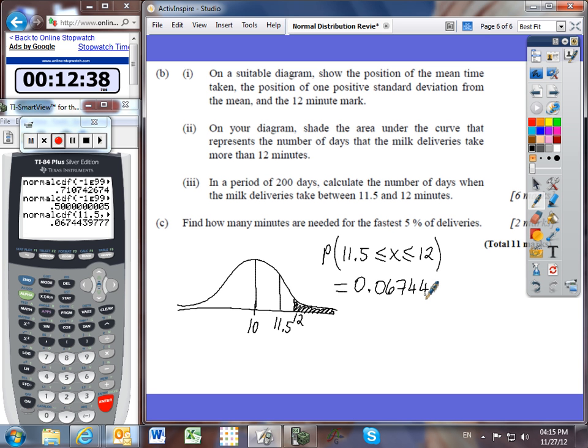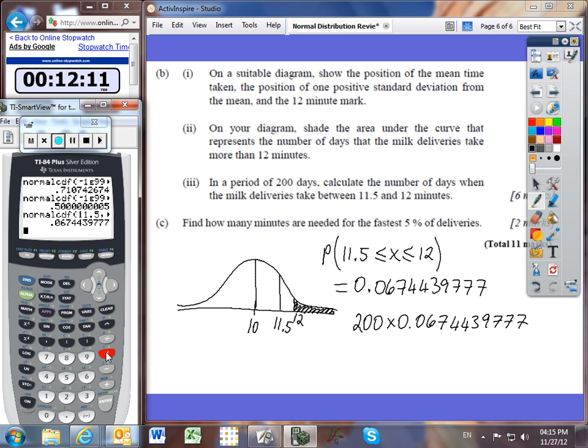The probability of it being between 11.5 and 12 looks to be 0.06744. That's more decimal places than I need, but remember I'm about to multiply it by 200, so I'm just going to use the entire amount. Then I'm going to multiply this amount by 200. If this is the probability of it occurring once, let's multiply that probability by 200 to find out how many of the 200 times it happened.